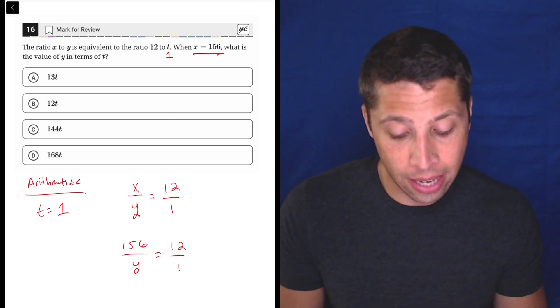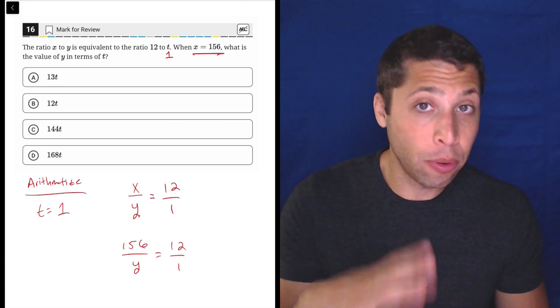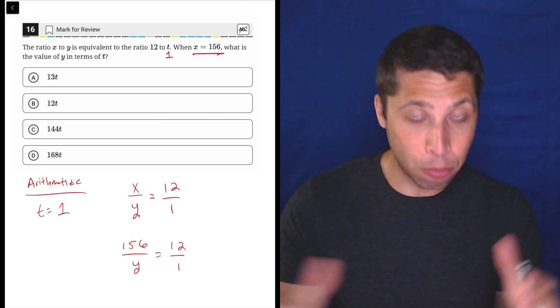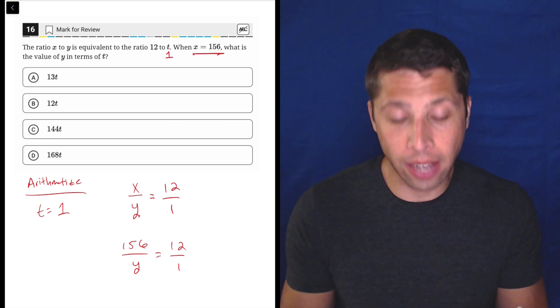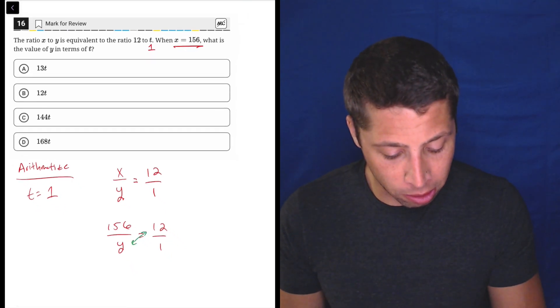So what they're doing here is basically saying, what is y equal to? Because now that we've gotten rid of t, we don't need to worry about moving things around. We've just got to get y by itself. And the best way to do that here is to cross multiply.